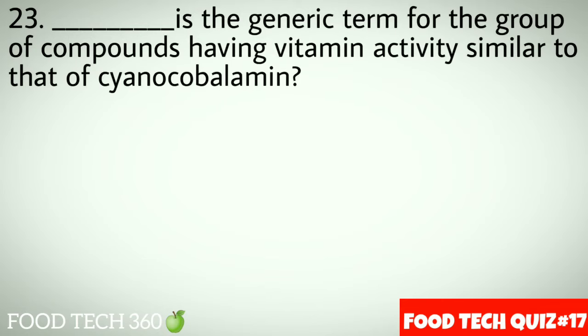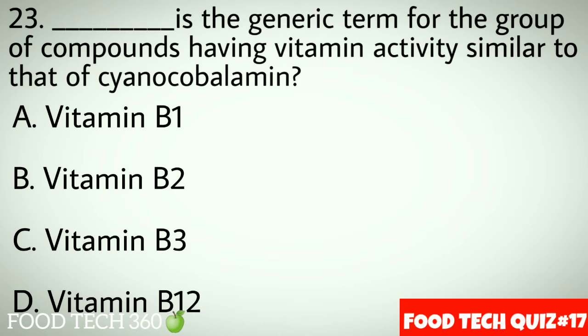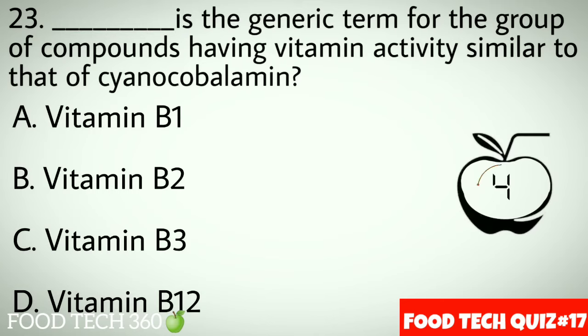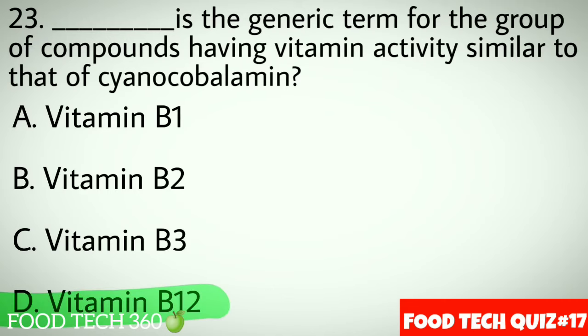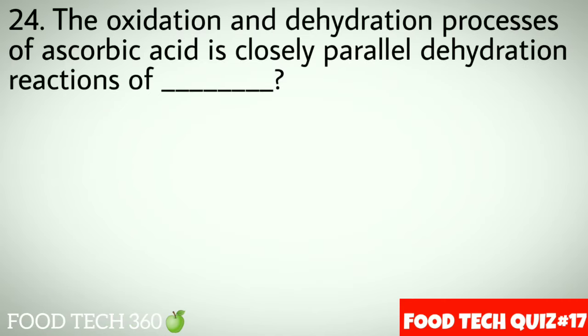Question number 23: Dash is the generic term for the group of compounds having vitamin activity similar to that of cyanocobalamin. Options: A. Vitamin B1, B. Vitamin B2, C. Vitamin B3, D. Vitamin B12. Correct answer: D. Vitamin B12.